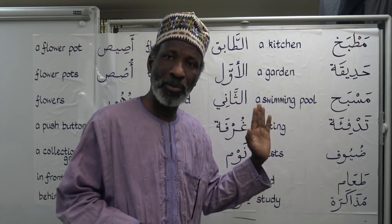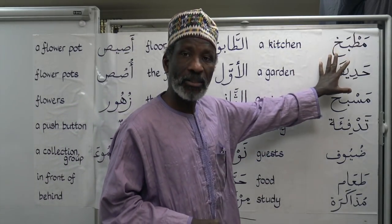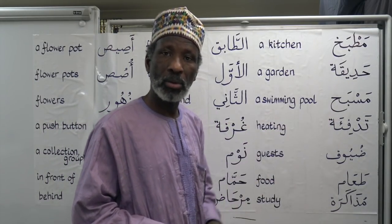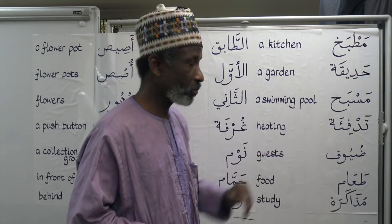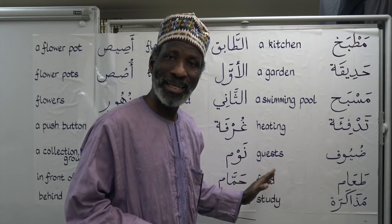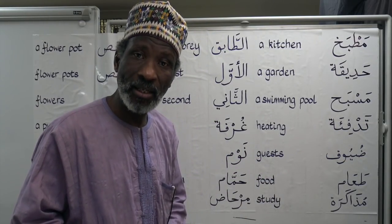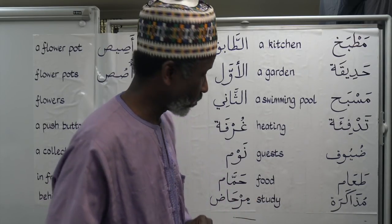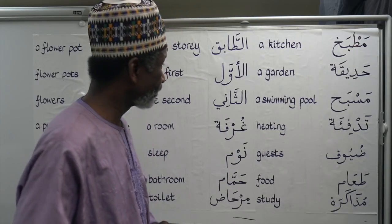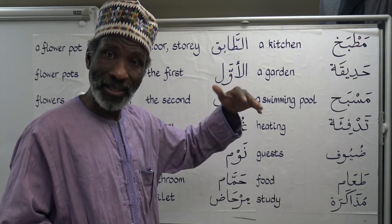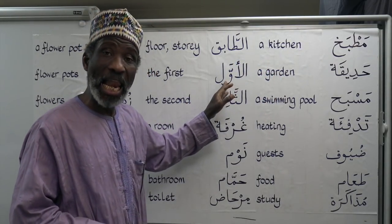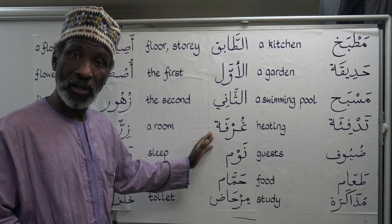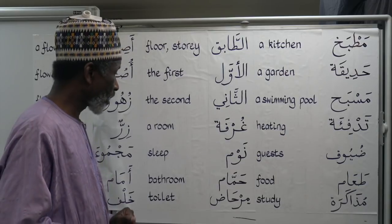First of all, let's deal with the relevant vocabulary. Matbahun — a kitchen. Hadiqatun — a garden. Masbahun — a swimming pool. Tadfiyatun — heating. Duyufun — guests, that's the plural of daifun, a guest. Ta'amun — food. Muzakaratun — study. And tabiq — a floor or story of a building.